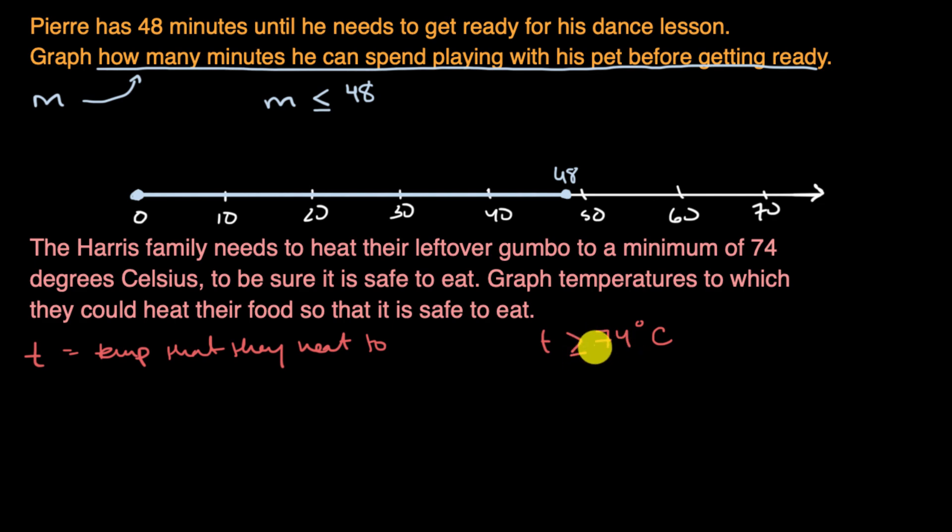At some point, you can get to such a high temperature that you essentially turn your food into ash. It might not be a delicious gumbo anymore, but it would probably be safe to eat if you're just eating gumbo powder or some gumbo ash, I guess. Actually, I'm not sure if that's safe to eat. But let's just assume it is. I don't recommend doing that.